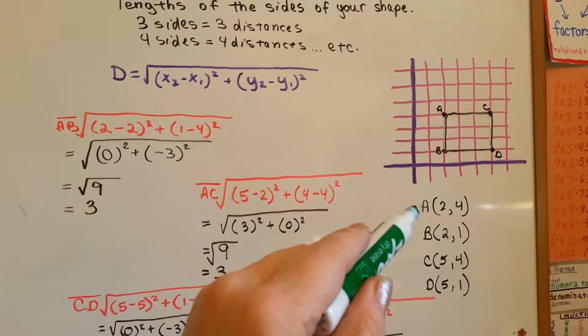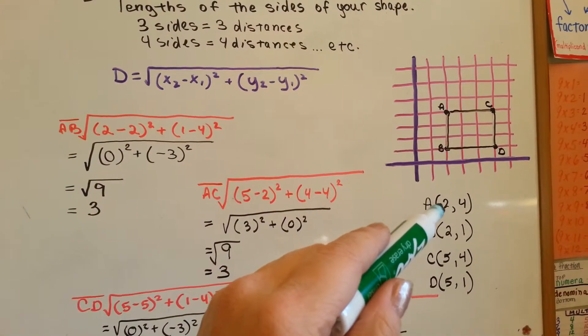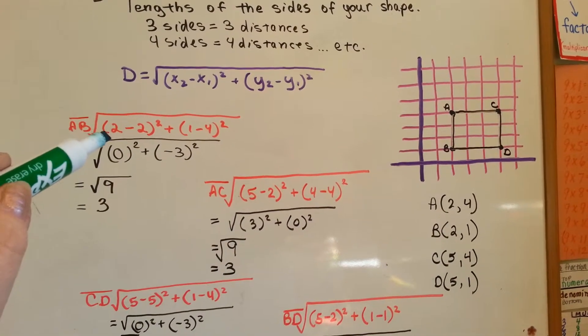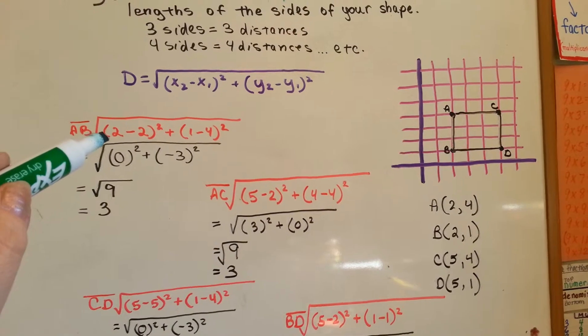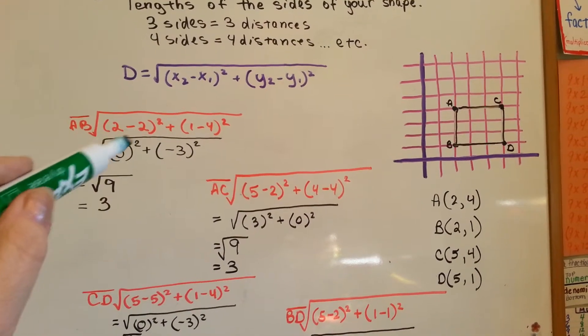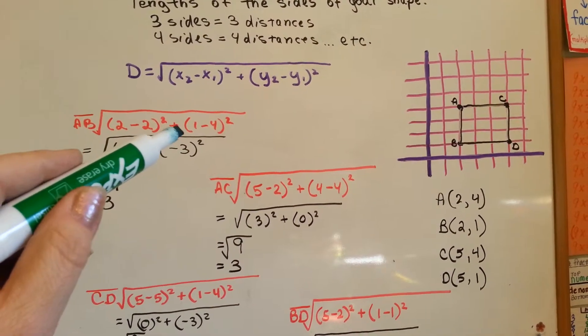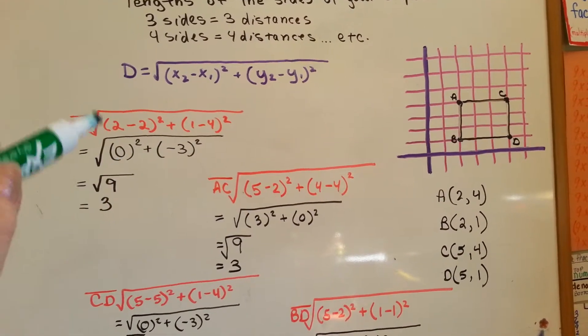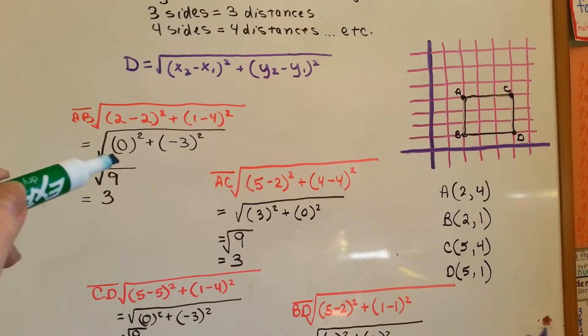So, the first ordered pair is (2,4) and (2,1). So, you plug in the second x minus the first x, 2 minus 2 is 0 and 1 take away 4 is negative 3 and now we have to square them. Because remember this whole thing is a big square root.